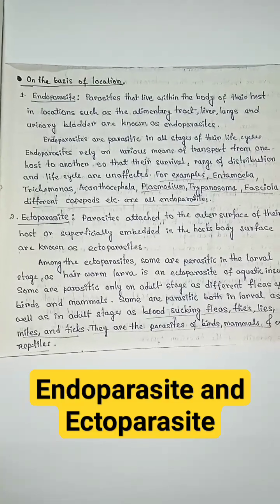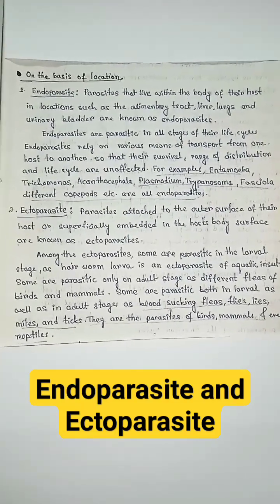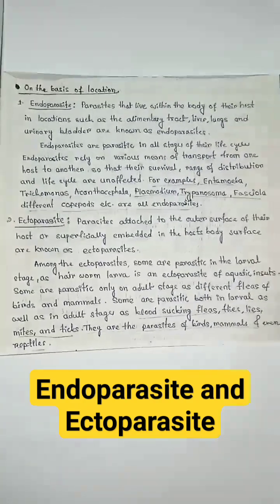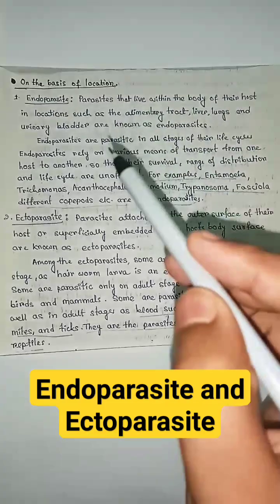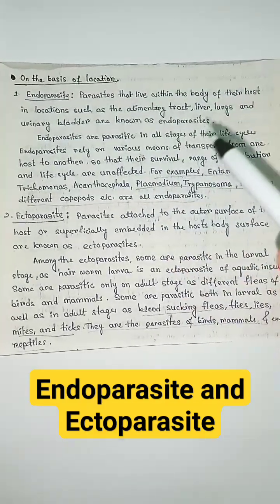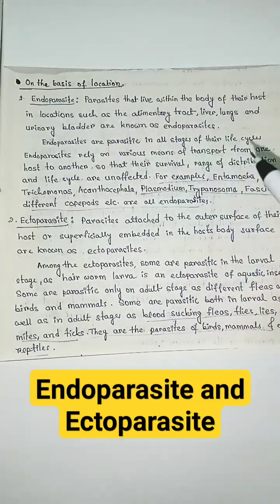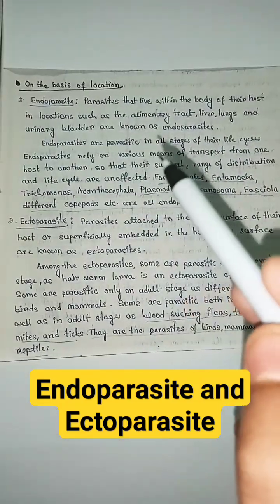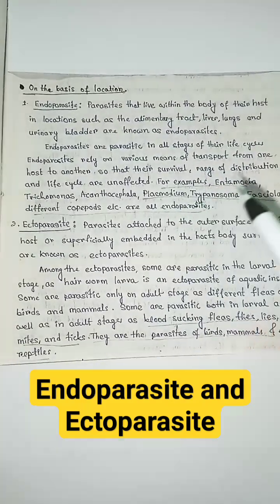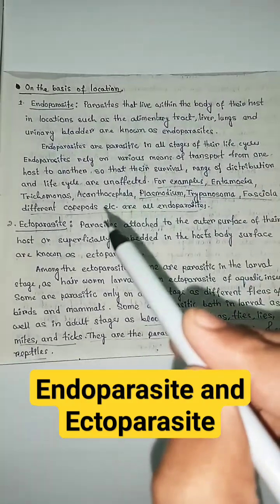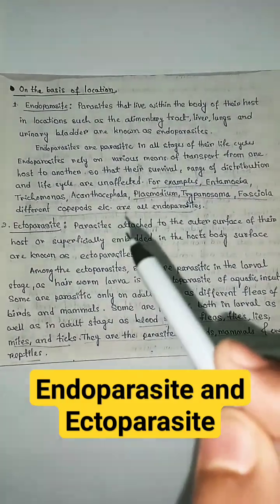On the basis of location, parasites are divided into two categories: endoparasites and ectoparasites. Parasites that live within the body of their host, in locations such as the alimentary canal, liver, lungs, and urinary bladder, are known as endoparasites. Endoparasites are parasitic in all stages of their life cycle. For example, Entamoeba, Trichomonas, Plasmodium, Trypanosoma, Fasciola, and different helminths are